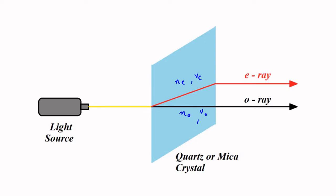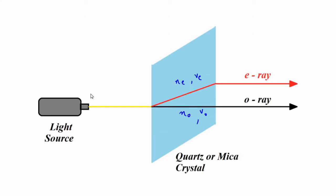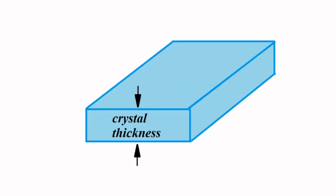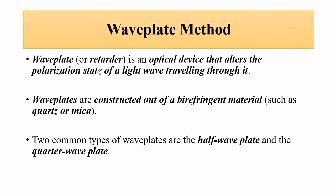As a result of the two principal refractive indices, the two components travel with different velocities v_e and v_o, they are shifted laterally, and they undergo a phase shift. The phase difference between the ordinary ray and the extraordinary ray depends on the wavelength of the light from the source, the two principal refractive indices offered by the doubly refracting crystal (η_o and η_e), and the thickness of the crystal.